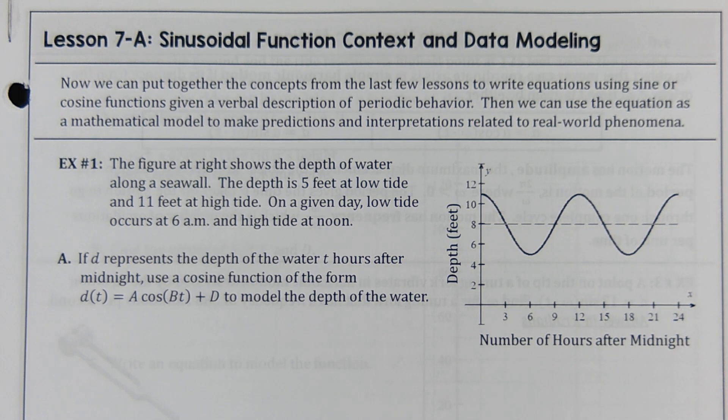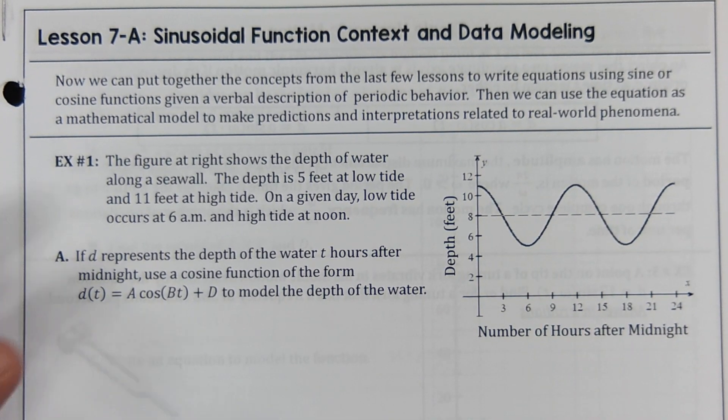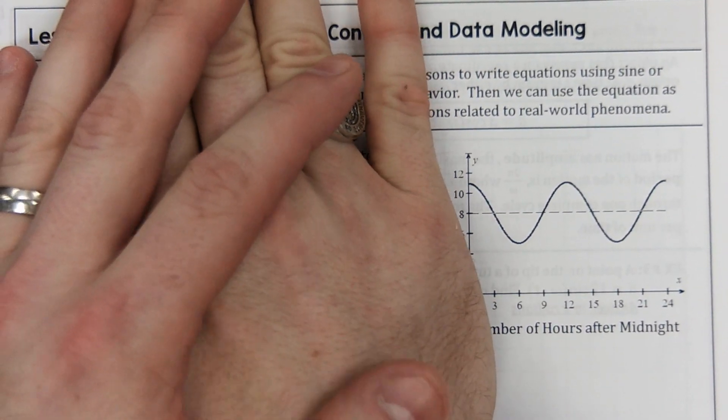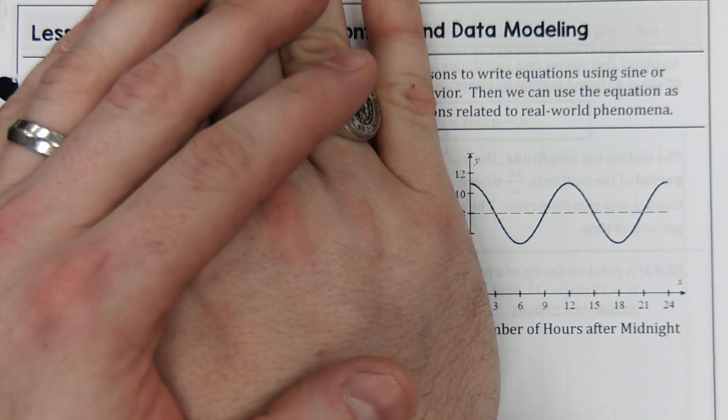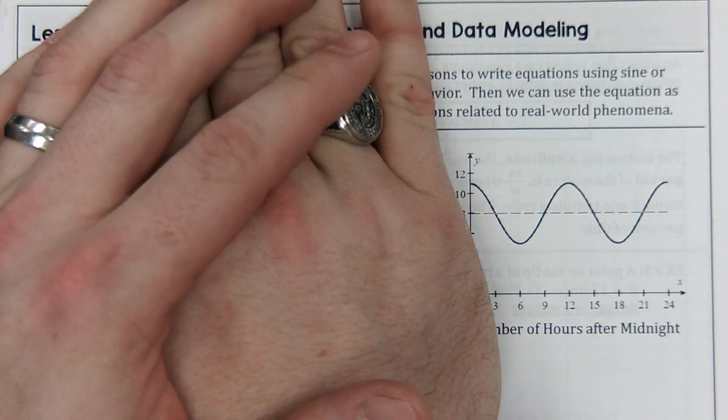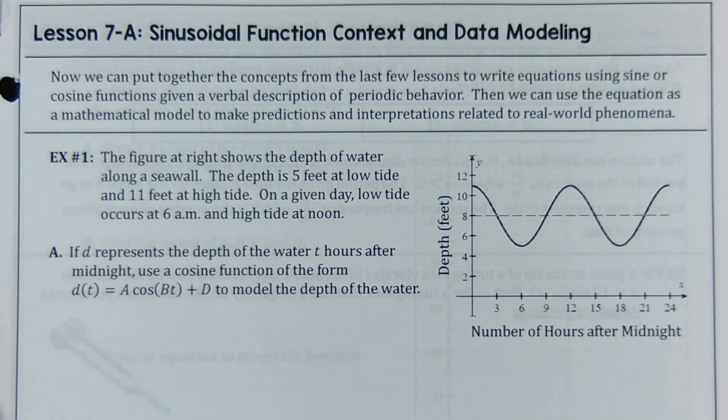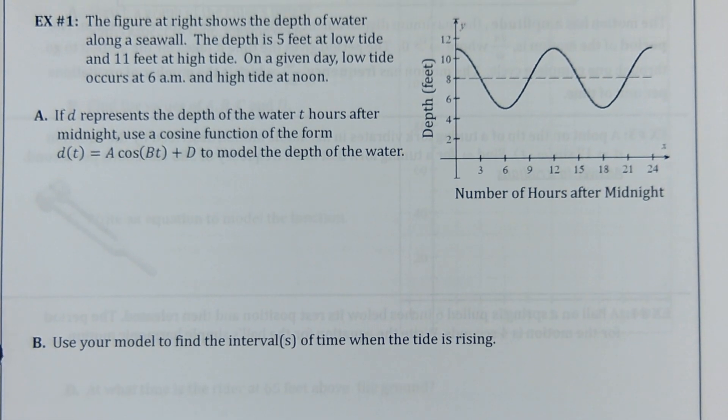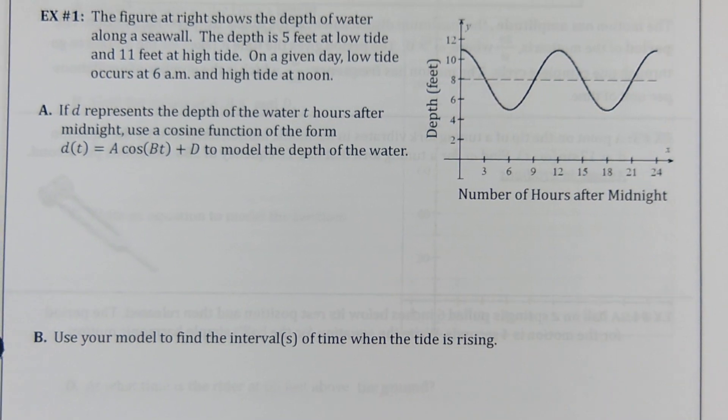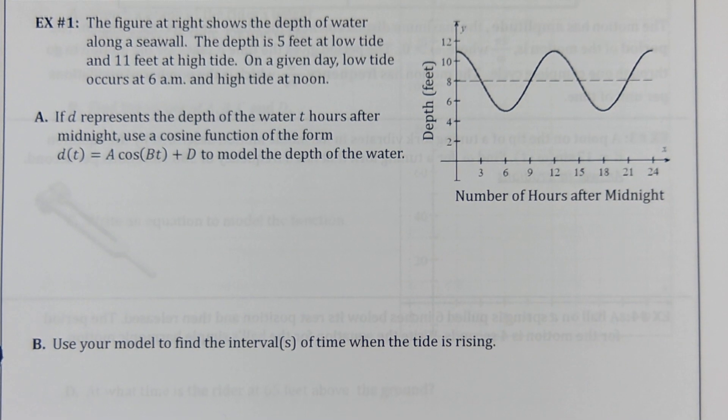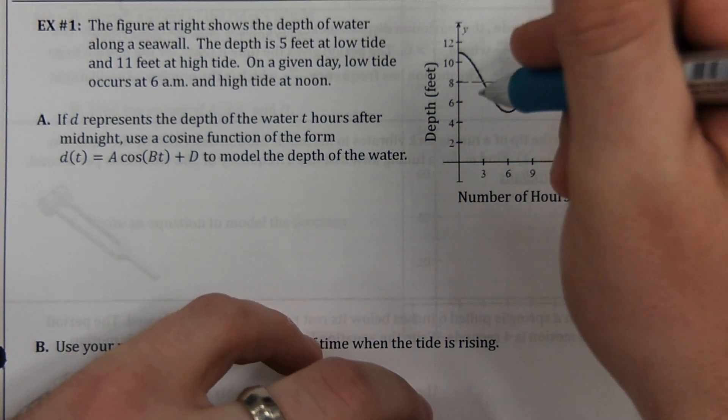And it is pretty easy too because we've already done a whole lot of writing equations from pictures. I mean, we don't have to have any words at all. I could say like, hey, let's find an equation for this. And I feel like you guys could do it. I really do think that we're pretty good at that by now. So what is this thing showing us? The figure at the right shows the depth of water along a sea wall. So this dotted line must be our sea wall. The depth is five feet at low tide and 11 feet at high tide.